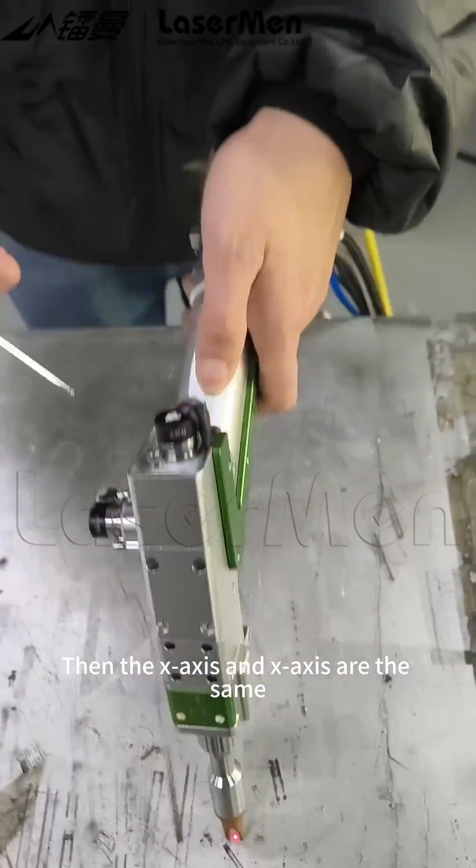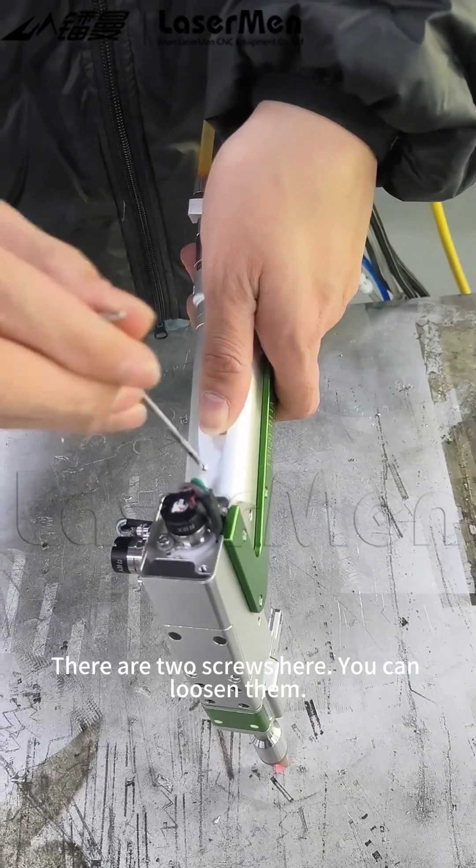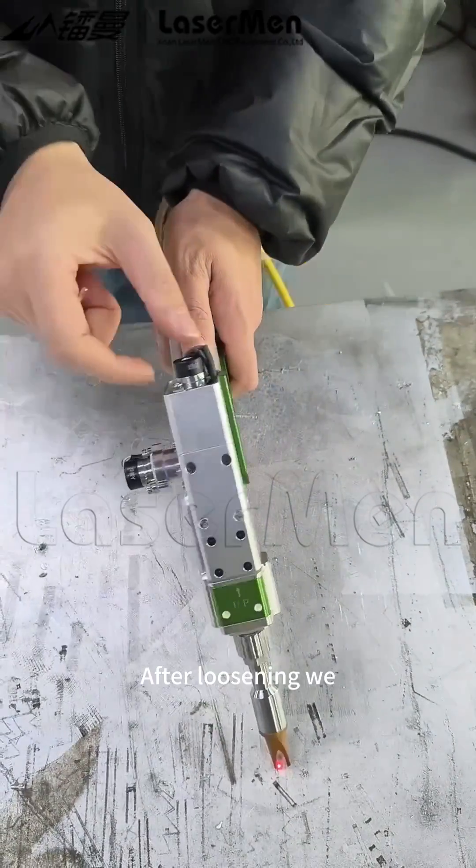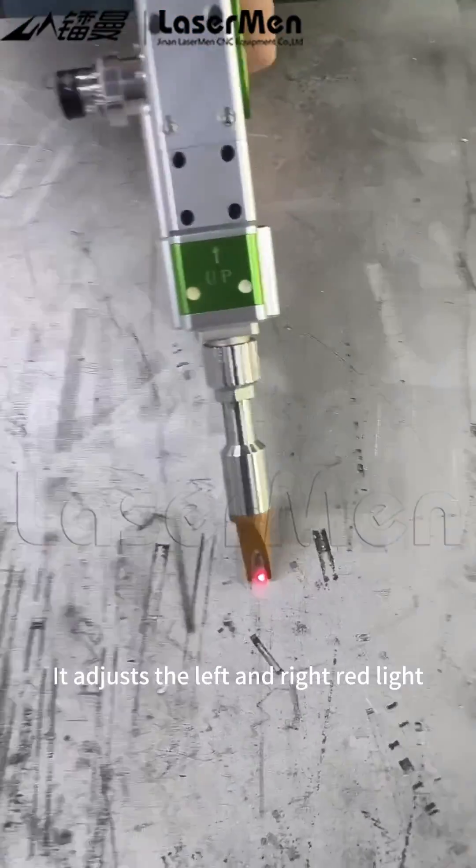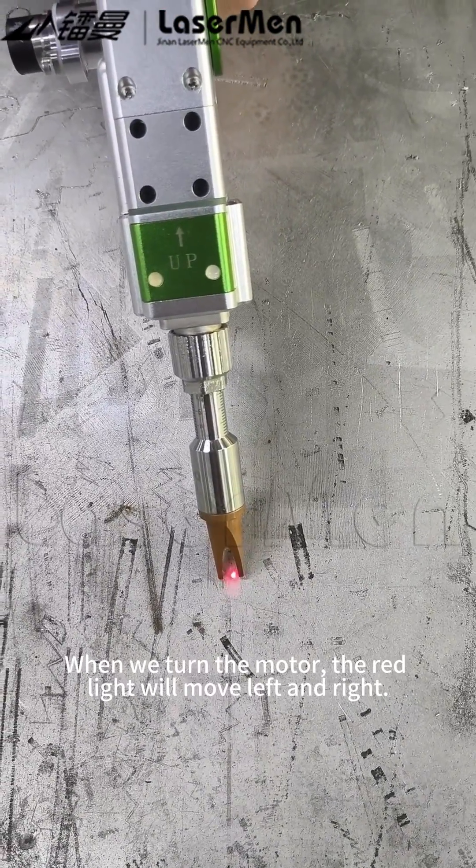Then the X-axis. The X-axis is the same. If you have two screws here, you can loosen them. After loosening, it adjusts the left and right red light. When we turn the motor, the red light will move left and right.